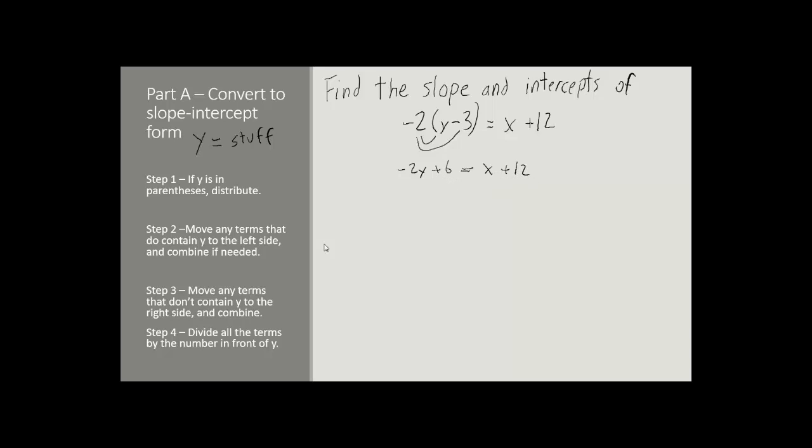For our second step, let's look for any terms that contain y. I'll mark them with a red underline. Well, we've got one here on the left, and we don't have any others. Now, we want all of our terms that contain y to be placed on the left side. If there's more than one, we can combine them at this point. Now, right now, there isn't, so the equation's good as is.